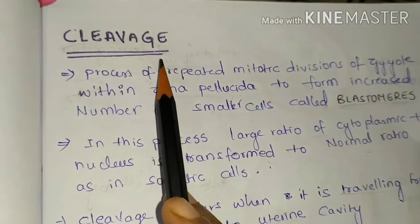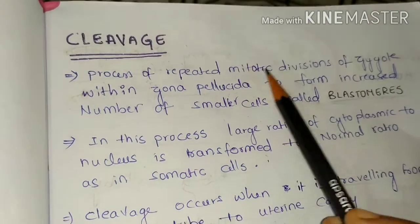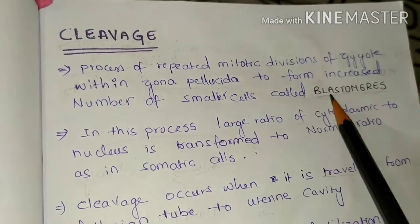Hi friends, let's learn about cleavage in embryology. Cleavage starts immediately after fertilization and it is a process of repeated mitotic divisions of zygote within zona pellucida to form increased number of small cells called blastomeres.